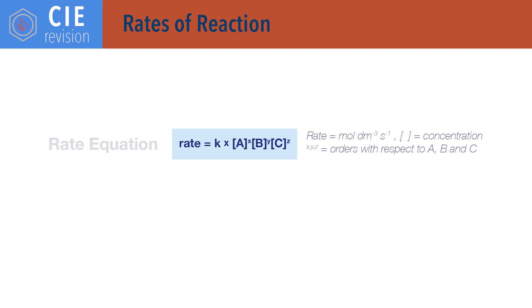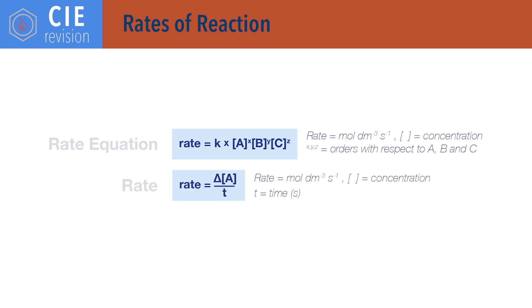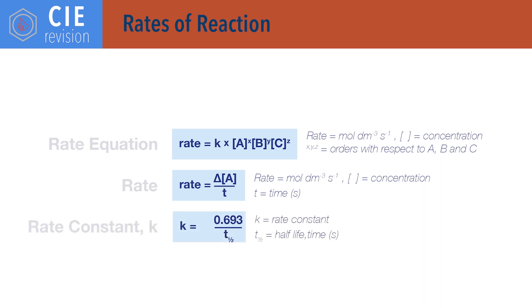For rates of reaction. Rate equals k times concentration of reactants times each other, with each raised to the power of the order of reaction with respect to that reactant. Rate has units of moles per decimetre cubed per second, k is the rate constant with different units dependent on the reaction, and concentration is given in moles per decimetre cubed. Rate also equals change in concentration of something divided by time. k, the rate constant, equals 0.693 divided by half-life T½ for a first order reaction.